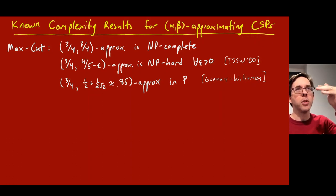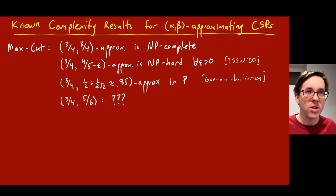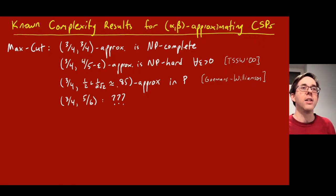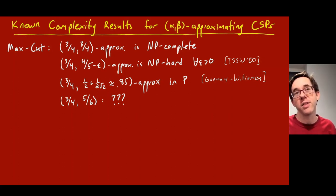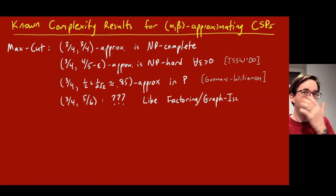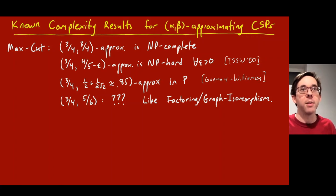What about between 80% and 85%? For instance, if the optimum is five-sixths, can you efficiently find a cut achieving three-quarters? This is unknown — a gap in our knowledge, an open problem like factoring or graph isomorphism, where we neither know a polynomial-time algorithm nor an NP-hardness proof. It remains a great open mystery about max cut.